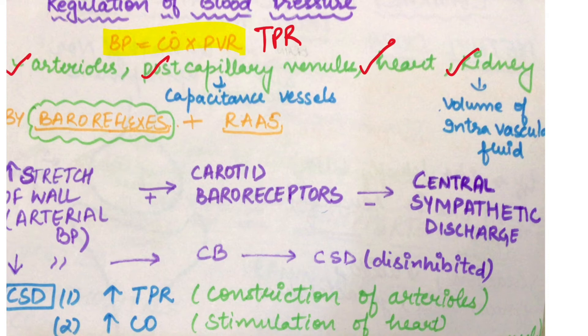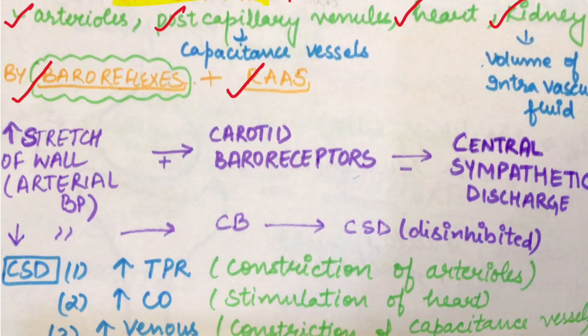To regulate blood pressure, we have two things: one is baroreflexes, and the other is the RAAS — renin, angiotensin, aldosterone system. We have to regulate both of these.